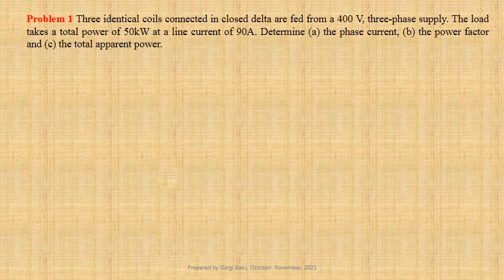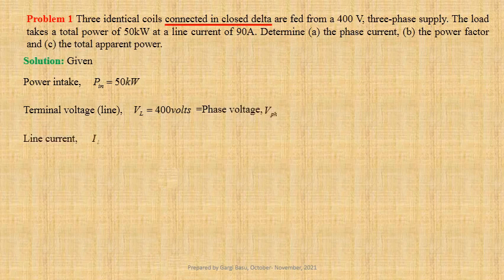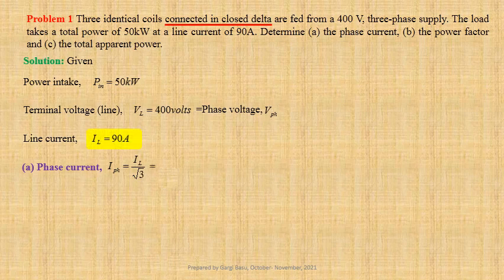Let us first write down the given data. Power intake P-in equals 50 kilowatts. Line-to-line terminal voltage V-L equals 400 volts. Since the coils are connected in delta, V-L equals phase voltage V-phase. Line current I-L equals 90 ampere. For balanced delta connected load, phase current I-phase equals I-L divided by root three, that is 90 divided by root three, giving us 51.9615 ampere.